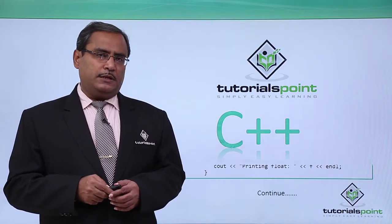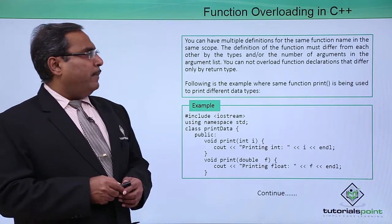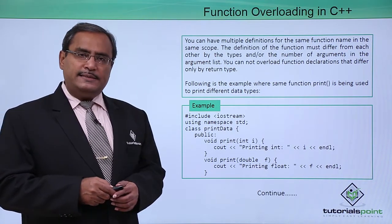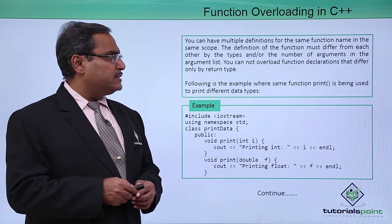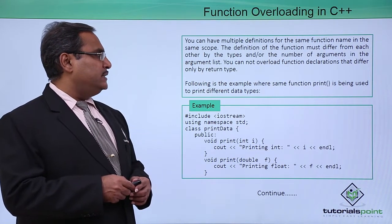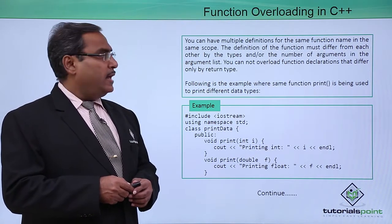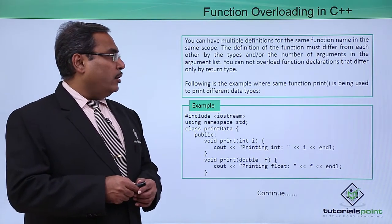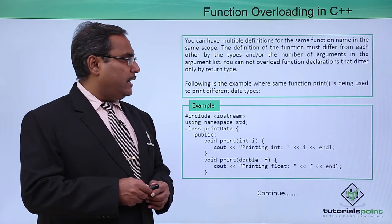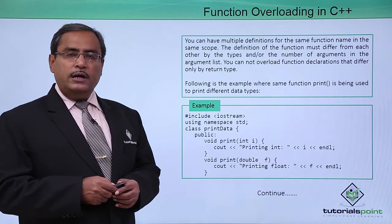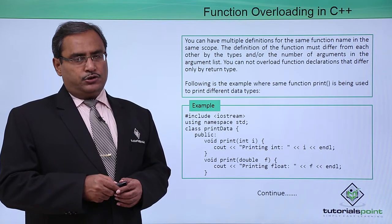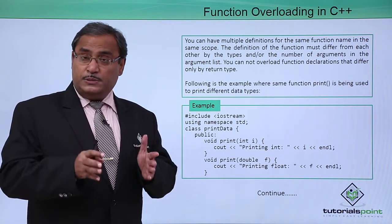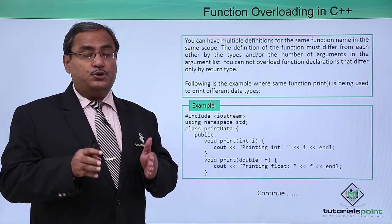Function overloading in C++. You can have multiple definitions of the same function name in the same scope. The definition of the function must differ from each other by the types and/or the number of arguments in the argument list. You cannot overload function declarations that differ only in the return type. In the same scope, we can have multiple functions with the same name, but they must differ in their input arguments.